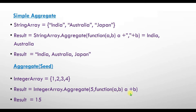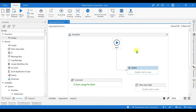There is one more overload method for aggregate, where the first parameter is a seed value — this seed value is the initial accumulator. Then you use the func delegate type as usual. For example, with a seed value of 5 and the collection {1, 2, ...}, the first pass gives a=5, b=next element, so 5+1=6, then a=6 with the next element, and finally it returns the accumulated result.